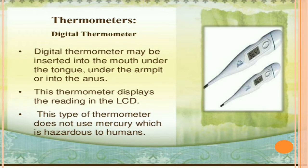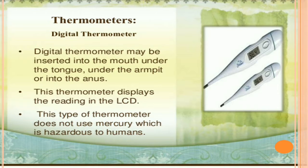Number 1: Thermometers. Here we can see a photograph of a thermometer. It's a digital thermometer. You all know how we use the thermometer and the reason we use it — because it checks our fever. A digital thermometer may be inserted into the mouth, under the tongue, under the armpits, or into the ear.